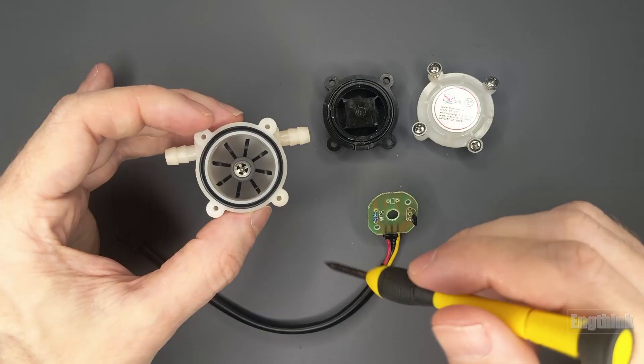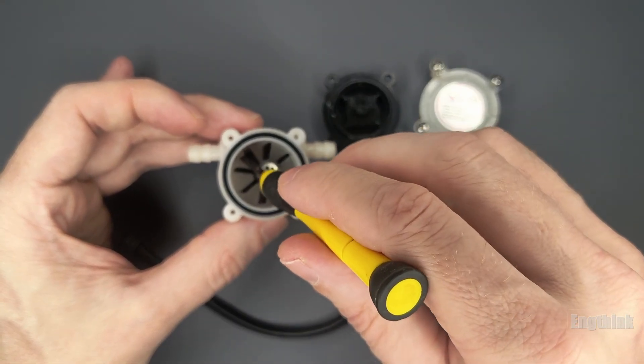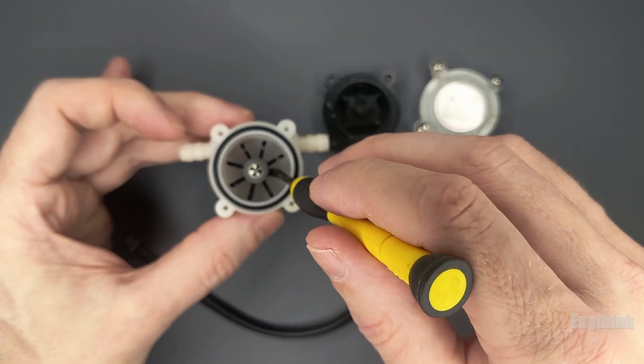In the lower part of the sensor, where the water flows, there's a rotor, a small pinwheel with a magnet attached.